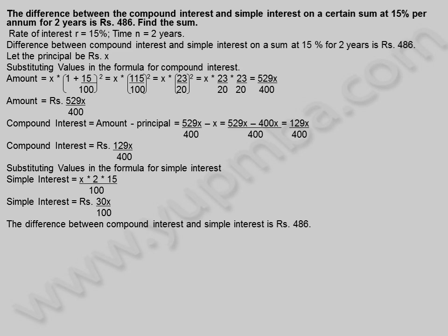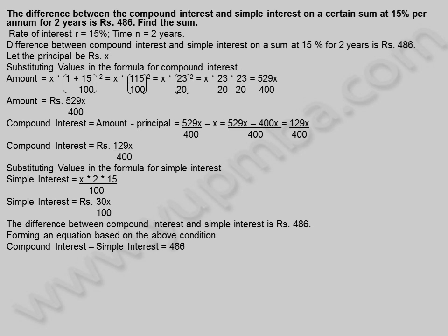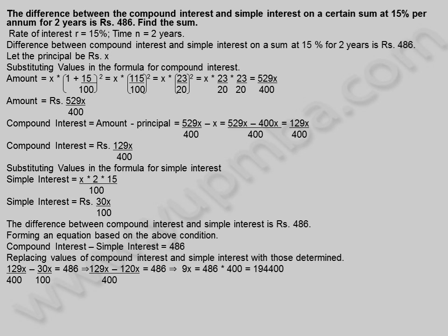The difference between compound interest and simple interest is 486 rupees. Forming an equation: compound interest minus simple interest equals 486. Replacing the values: 129X by 400 minus 30X by 100 equals 486. This gives (129X minus 120X) divided by 400 equals 486, so 9X equals 486 into 400, which equals 1,94,400.